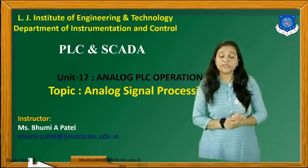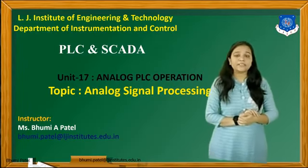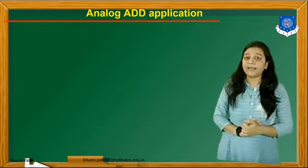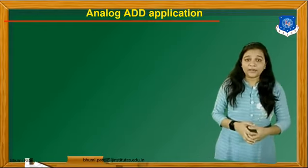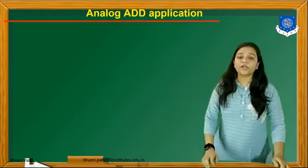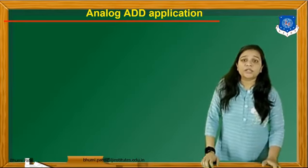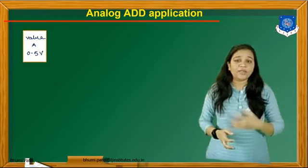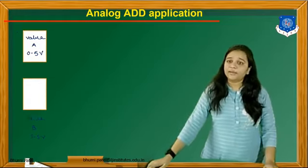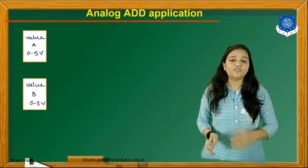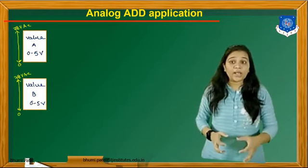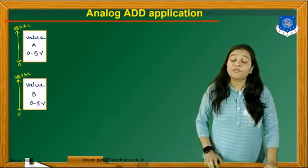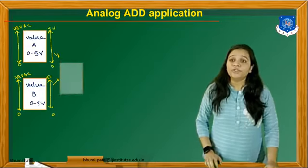Today we will take some examples using Analog Signal Processing. The first example is the Analog Add Application — if we can add two analog inputs for a particular system. So first, we take value A with a range of 0 to 5V, and value B also with a range of 0 to 5V. Then we apply the AC input of 0 to 78V AC. We have to add value A and value B.